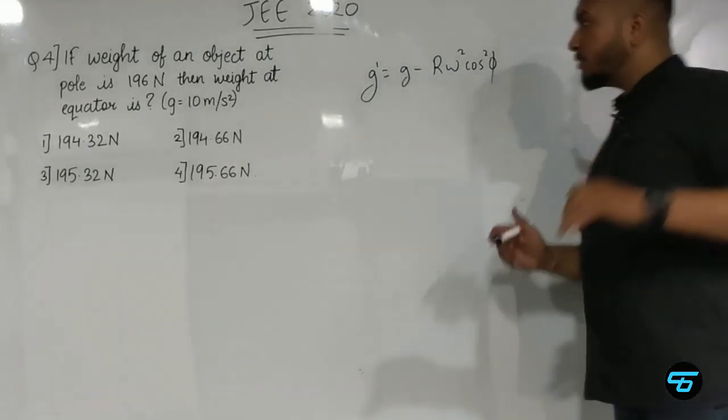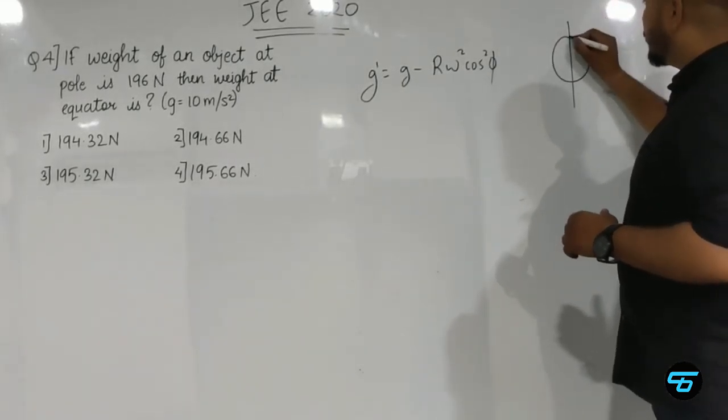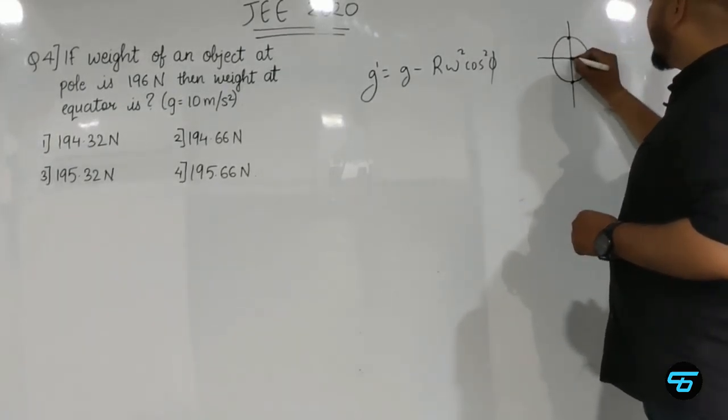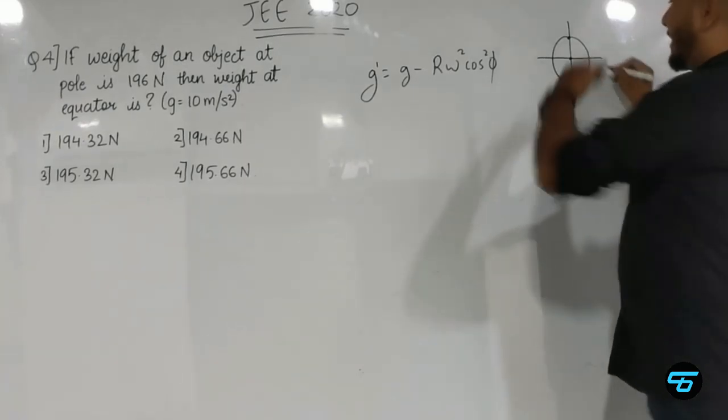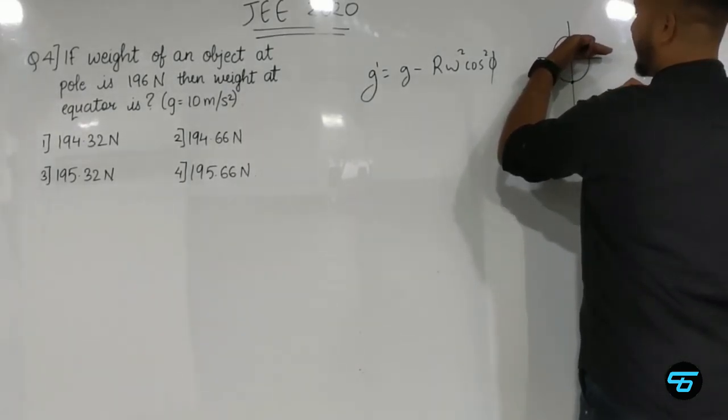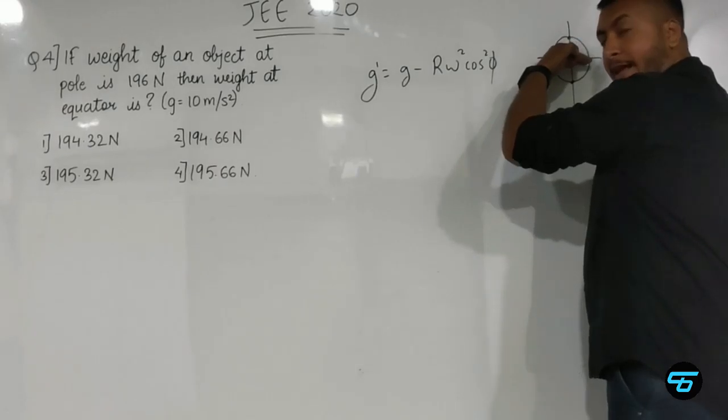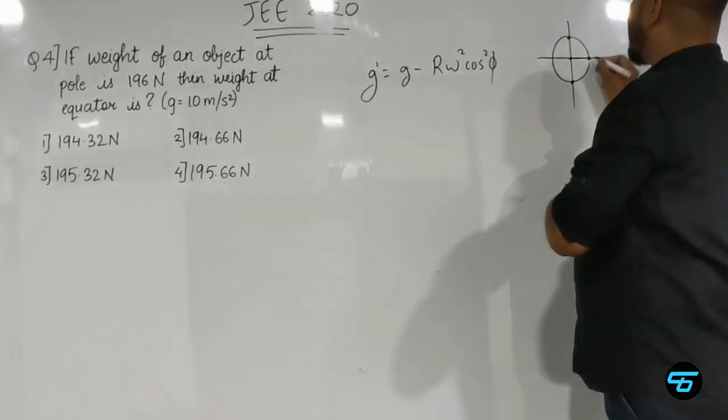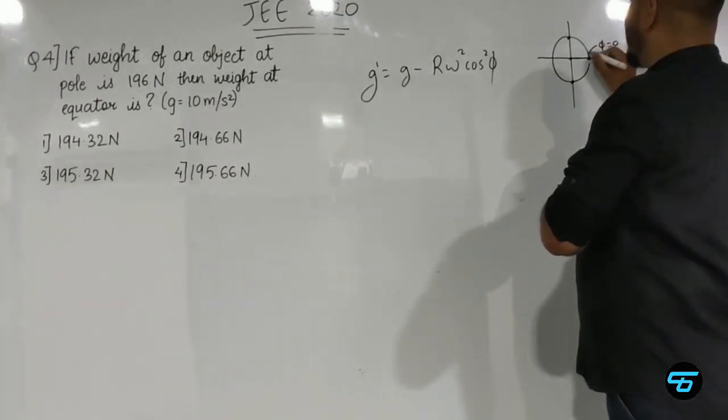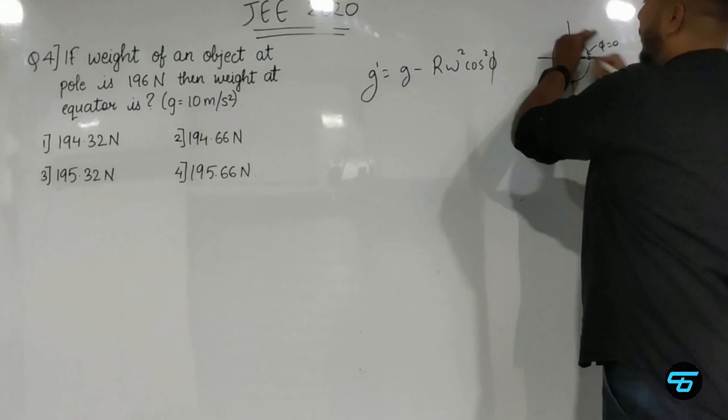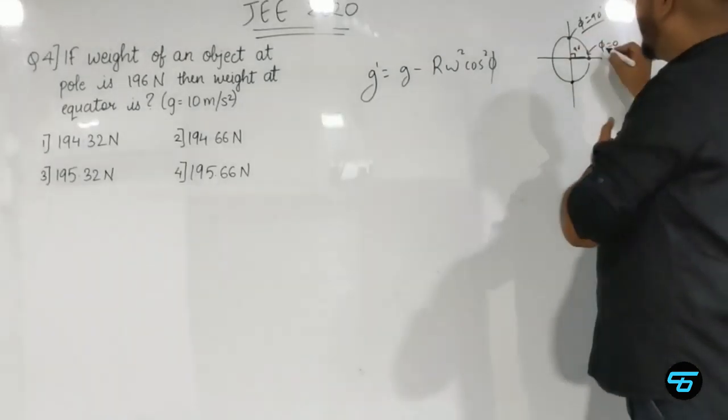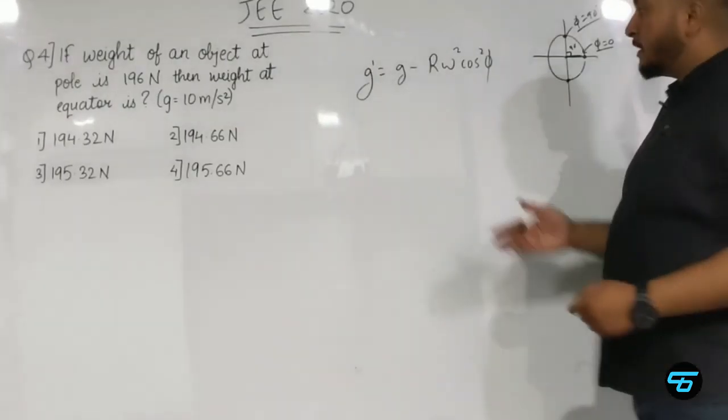Students, the Earth has poles and equator. The equator makes zero degrees, and the pole makes 90 degrees. So if we talk about the equator, phi value is zero as it makes zero angle. And at the poles, phi value is 90 degrees. The question asks about weight at equator where phi equals zero.